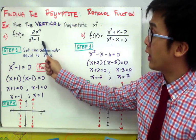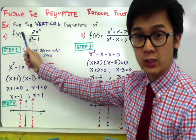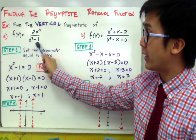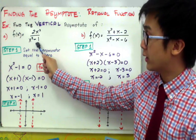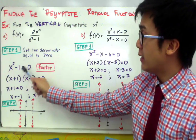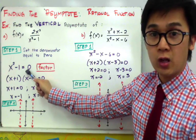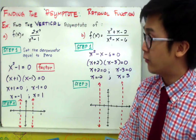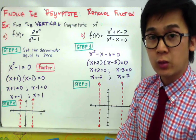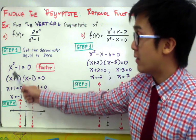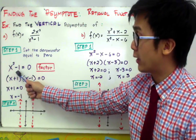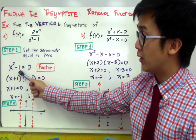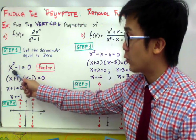In this particular rational function, we are going to ignore our numerator and focus our attention on our denominator. Since we have x² - 1, we are going to set it to 0 and solve for x. There are several methods: we can factor, use the quadratic formula, or complete the square. In this case, x² - 1 = 0 is a special case — the difference of two squares, which factors as x² - 1.